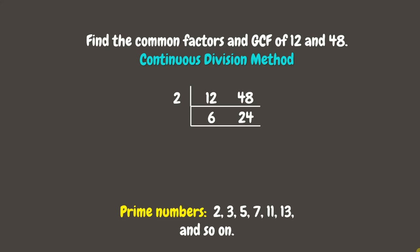Let us continue the process until none of the numbers have a common prime divisor. Since all the quotients are even numbers, we can still divide them by 2. 6 divided by 2 is 3, and 24 divided by 2 is 12. Now, 3 and 12 are both divisible by the prime number 3. So, let's divide them by 3: 3 divided by 3 is 1, while 12 divided by 3 is 4. The quotients can no longer be divided by another prime number. Our common prime factors are 2, 2, and 3. If we multiply them, we get 12 as the greatest common factor.